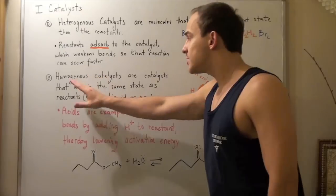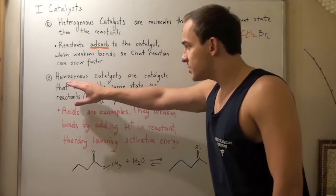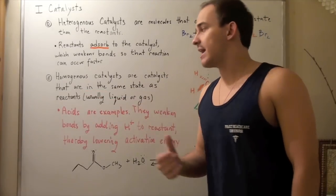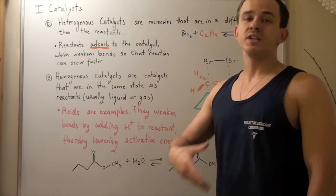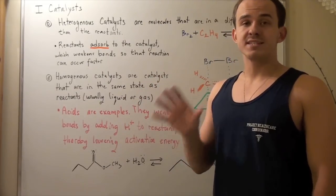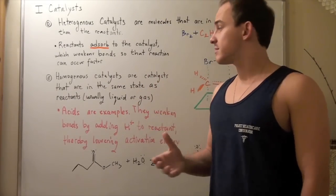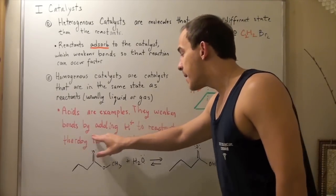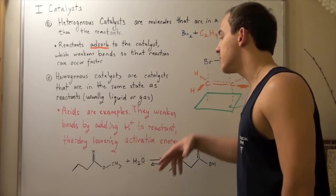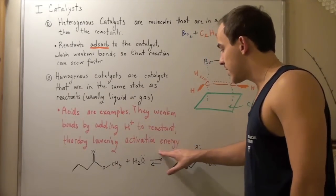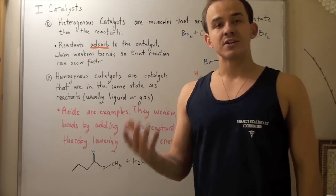Now let's look at homogeneous catalysts. Homogeneous catalysts are catalysts that are in the same state as our reactant, usually liquid or gas. A great and common example of homogeneous catalysts are acids. These guys weaken bonds by adding an H plus ion to one of the reactants, thereby lowering the activation energy and speeding up our reaction.